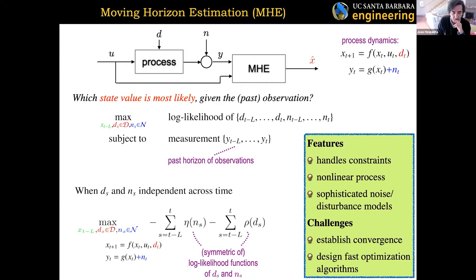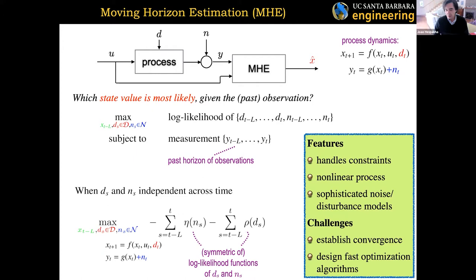The nice thing about this approach is that in principle, if we can solve any optimization, it is perfectly general. You can use any nonlinear process dynamics, any PDFs for noise — not just Gaussian, could be heavy-tailed. You can also handle constraints. Interestingly, constraints in estimation are good — they eliminate possibilities. If your state X contains a concentration that can never be negative, you can put that constraint and get better estimates. Constraints always help in estimation, unlike in control where they limit performance.